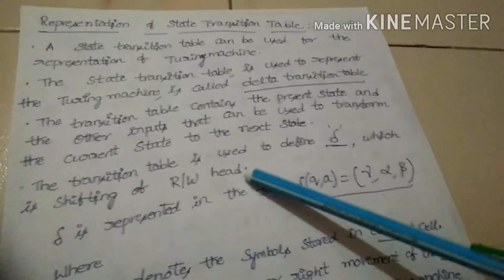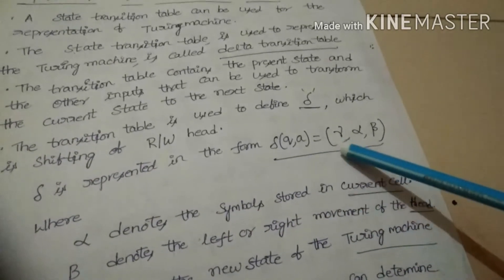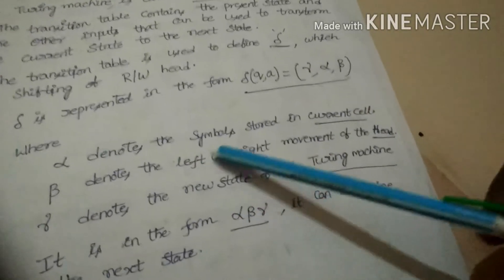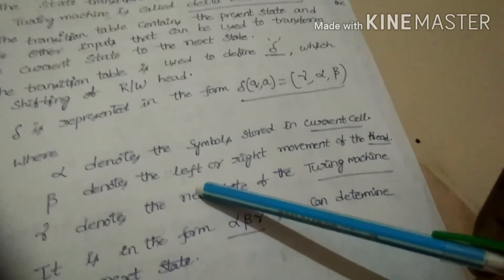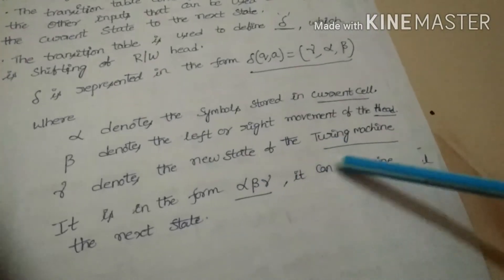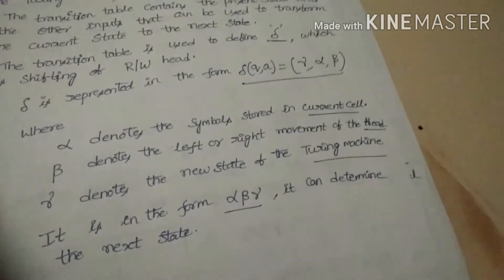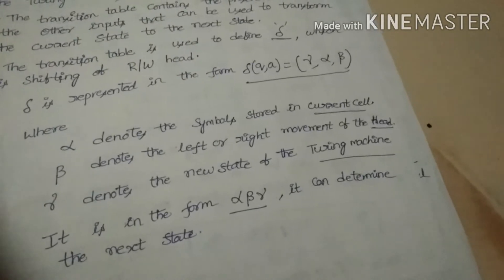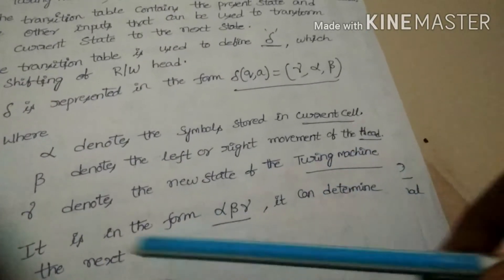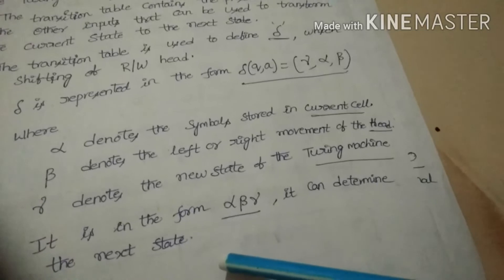The transition table defines the shifting of the read-write head. Delta is represented in the form of δ(Q, A) = (α, β, γ). Where α denotes the symbol stored in the current cell, β denotes the left or right movement of the head, and γ denotes the new state of the Turing machine. In the form of (α, β, γ), it can determine the next state.